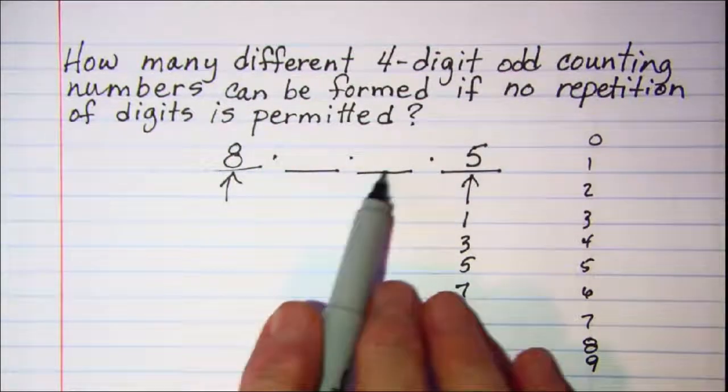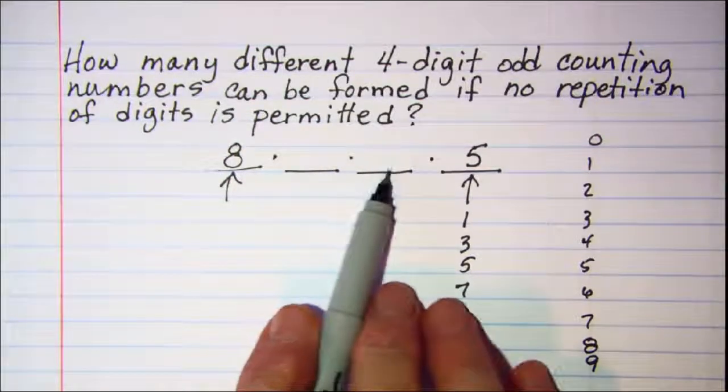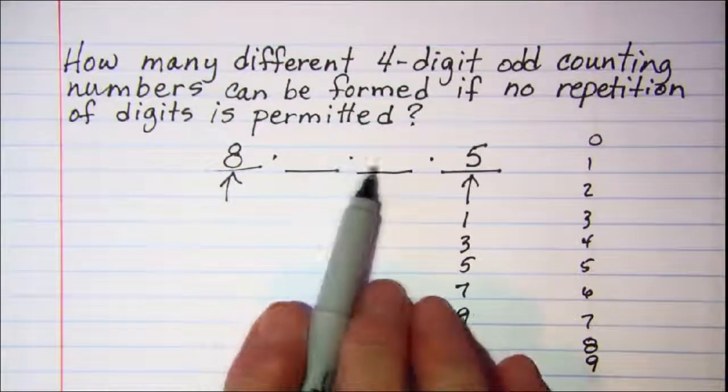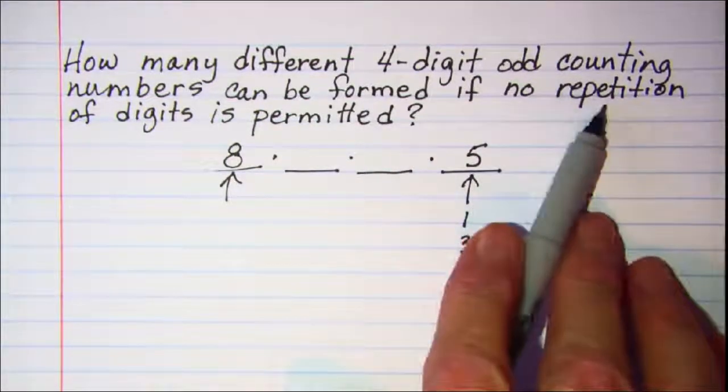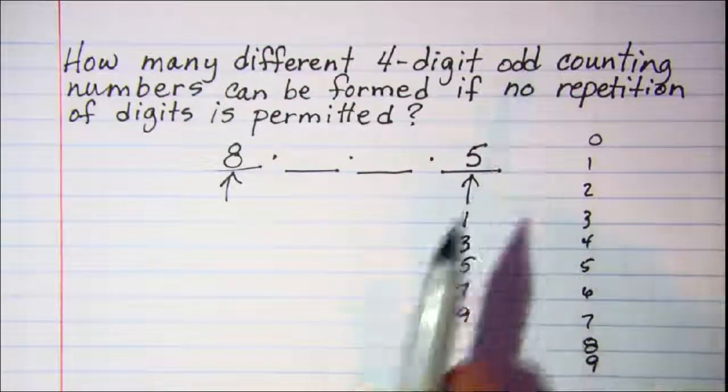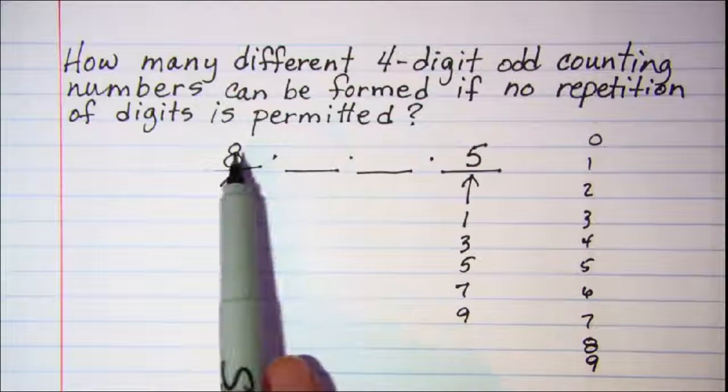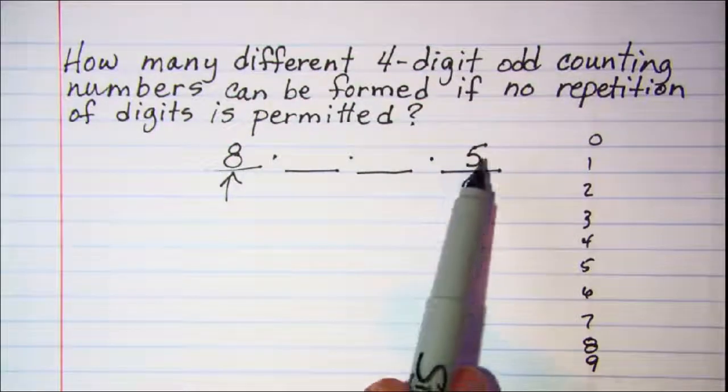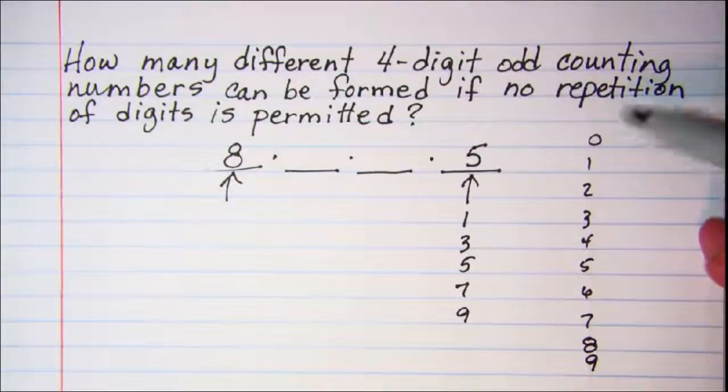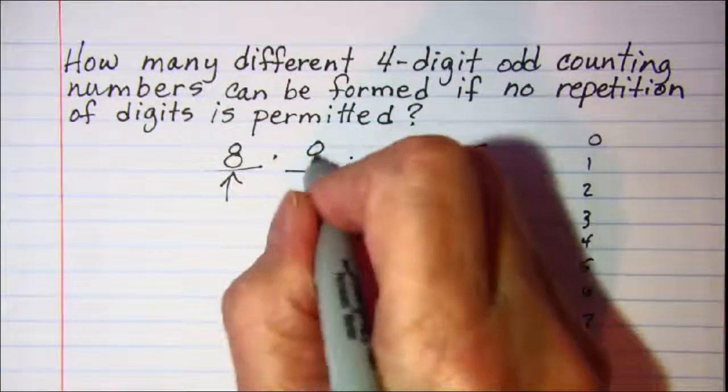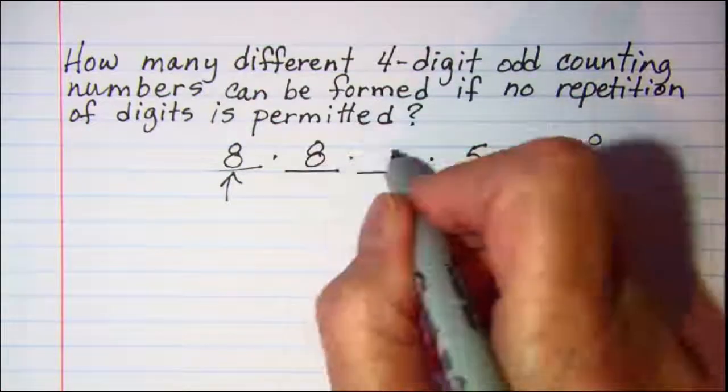Now these two middle positions, the hundreds place and the tens place, there's no restriction there except that I'm not allowed to repeat digits. So I've used two digits in the first and the last position. That leaves eight digits left. So I have eight here.